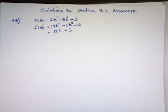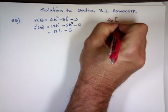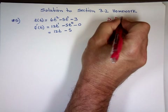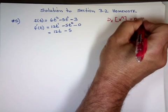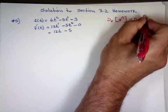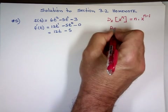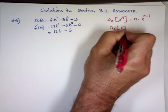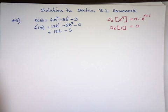The rule we use: the derivative of x to the n is n times x to the n minus 1. The derivative of any constant is always 0. These are the rules I'm going to be using.